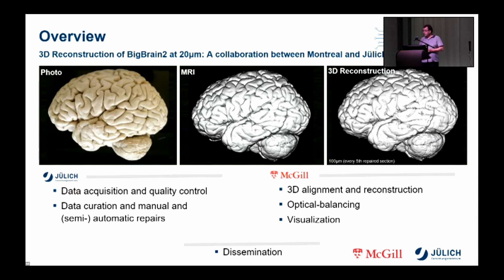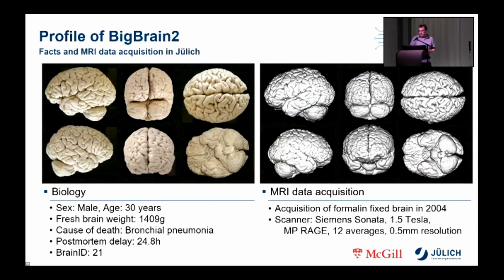BigBrain 2 is from a male who died of bronchial pneumonia in 1994 at the age of 30, which is pretty young for a post-mortem brain. The post-mortem time was about 25 hours, and the formalin-fixed brain was scanned at Jülich in 2004 with a Siemens Sonata 1.5 Tesla MR scanner at a resolution of 0.5 millimeters.